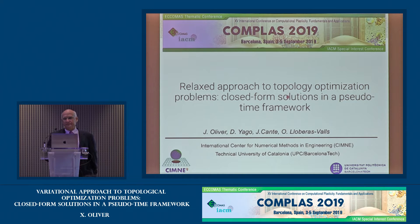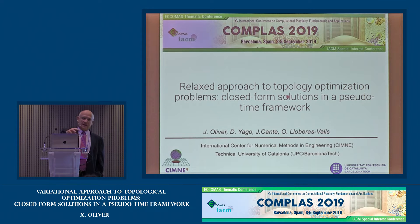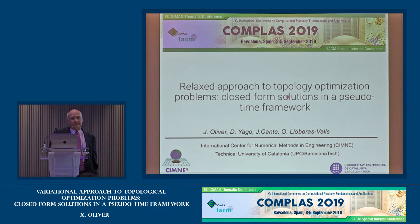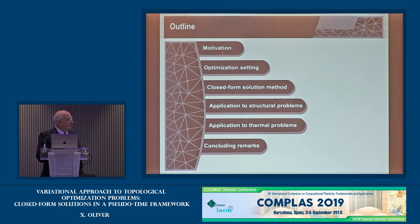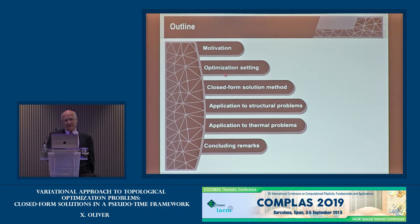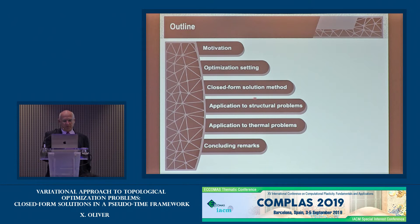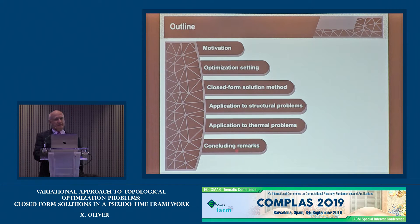This work comes from an exploration of existing methods for topology optimization as part of our main research on computational material design, including topology optimization, trying to find out if it's possible to improve them and get new settings for this deeply studied topic. The outline of my presentation: first I will motivate this work, then present our optimization setting, then a method based on closed-form solutions, then applications to structural and thermal problems, and finally some concluding remarks.